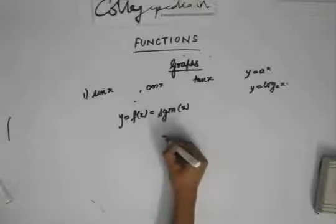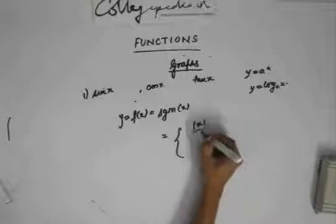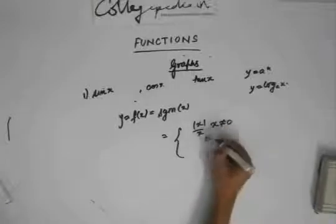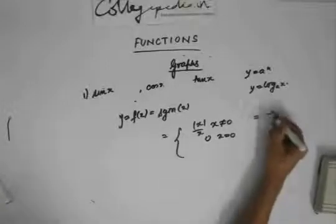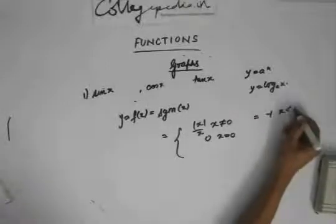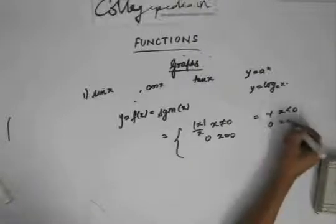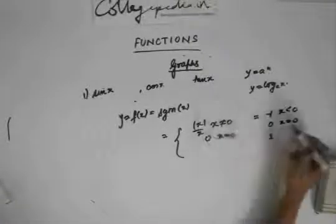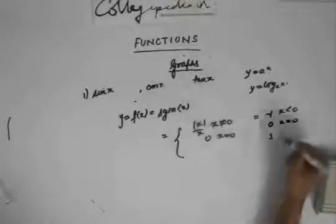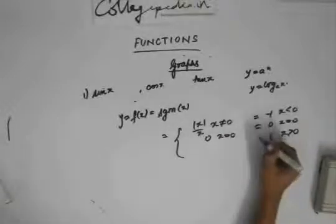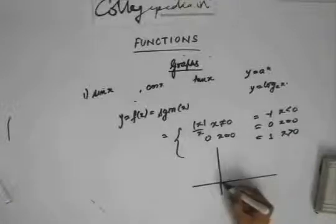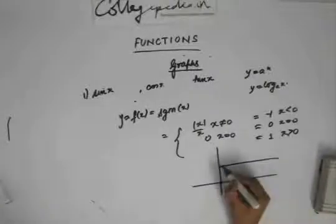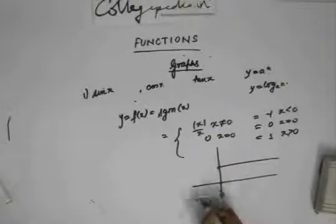The signum function is defined as x divided by mod x when x is not equal to 0, and 0 when x equals 0. Simplifying: it equals minus 1 when x is less than 0, 0 when x equals 0, and 1 when x is greater than 0. The graph is: at 0 it's 0, for any positive value it's 1, and for any negative value it's minus 1.